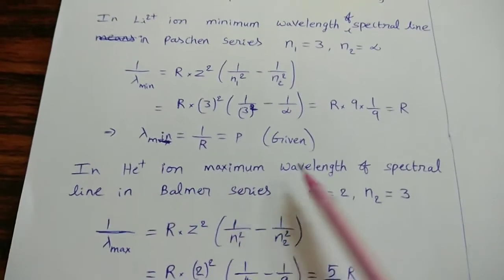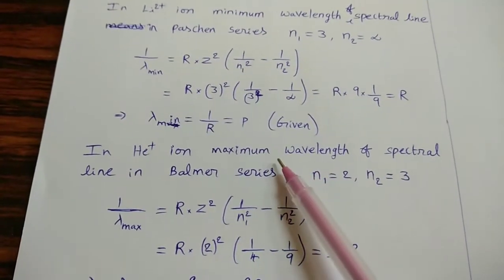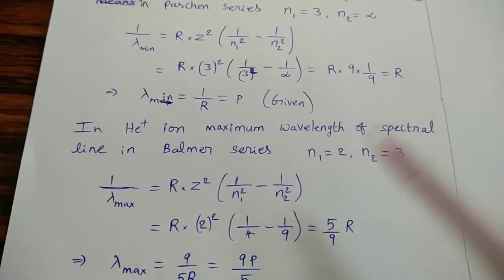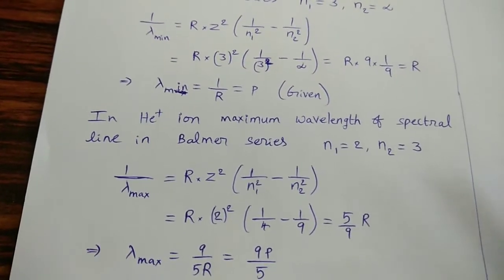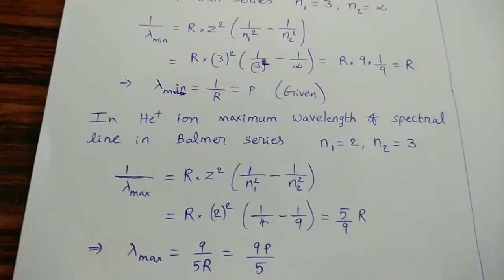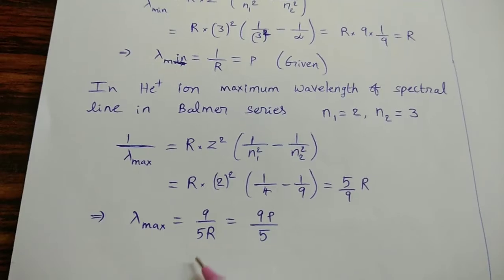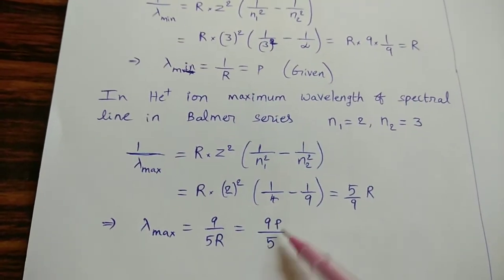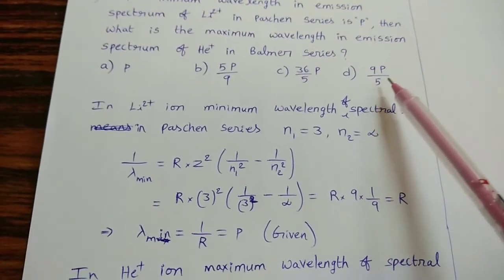For He+ ion, maximum wavelength of spectral line in the Balmer series — Balmer series has N₁ = 2, and maximum wavelength means N₂ = 3 (transition from third orbit to second orbit), since smaller energy difference gives larger wavelength. Substituting, we get λ_max = 9P/5 × (some factor from Z²). Since 1/R = 9P, the result is (9/5)P. Option D is the answer.